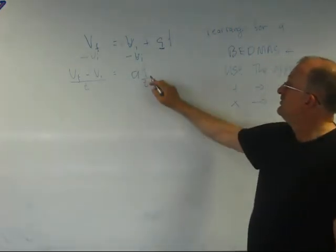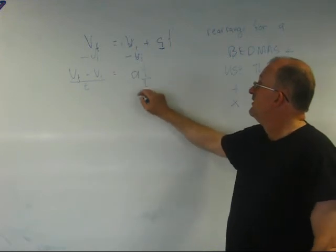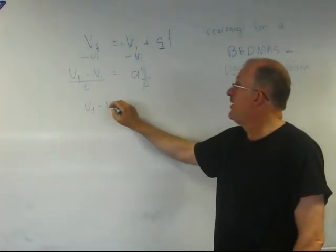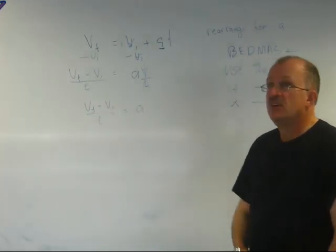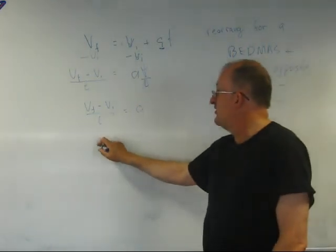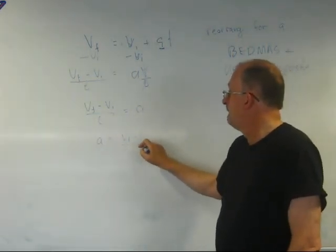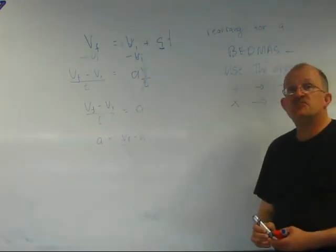So now, T divided by T, anything divided by T equals 1. So I'm going to get rid of that. So A equals VF minus VI over T, which is A. And I'll just shift the A onto the side. So that's the process that we use.